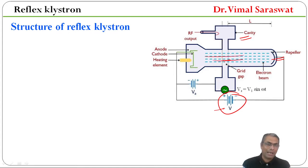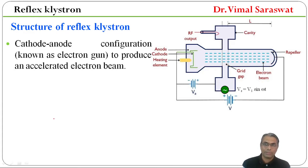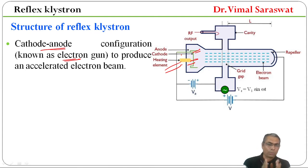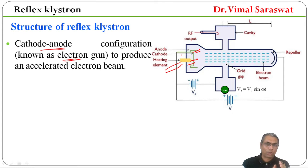The cathode-anode configuration forms the electron gun, which is used to provide an accelerated electron beam. When the heating element heats the cathode, electrons are emitted. The anode is a focusing anode used to focus the electrons. This cathode-anode configuration, called the electron gun, produces an accelerated electron beam in the form of a fine beam, which moves towards the repeller.